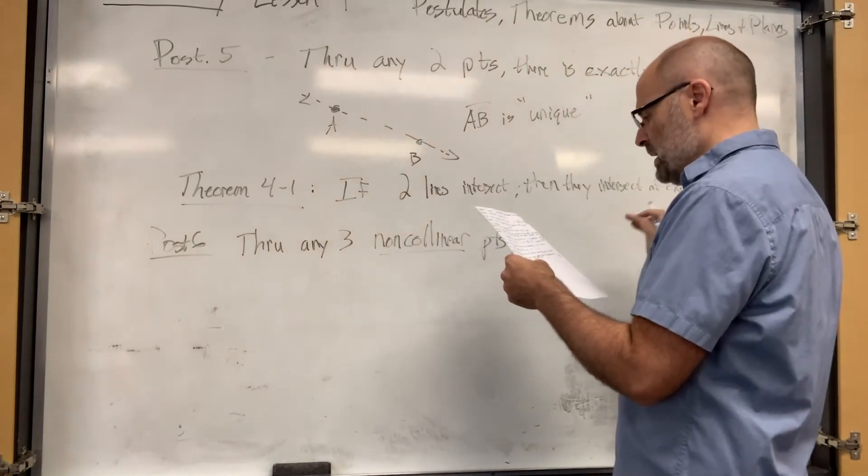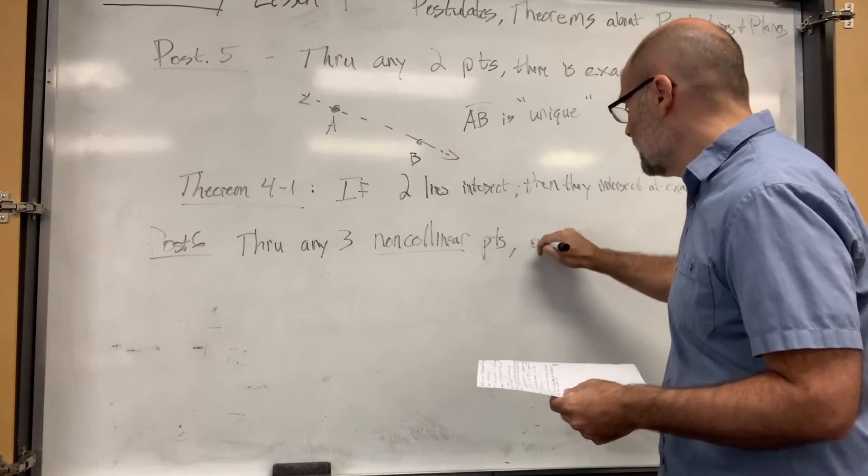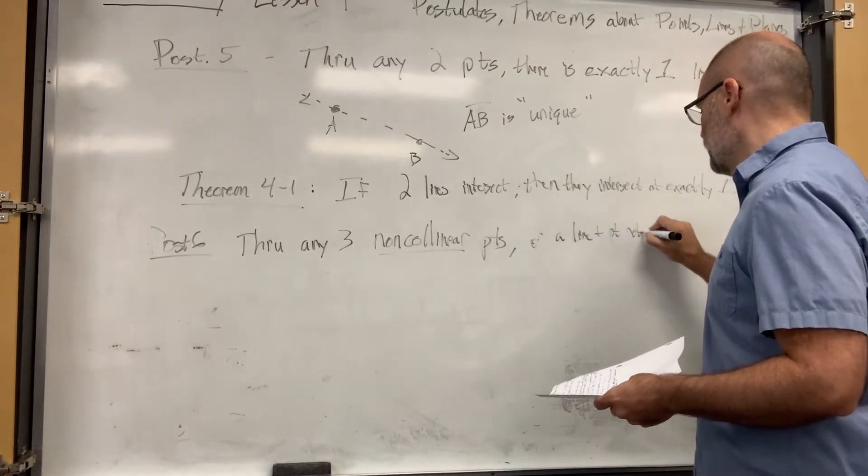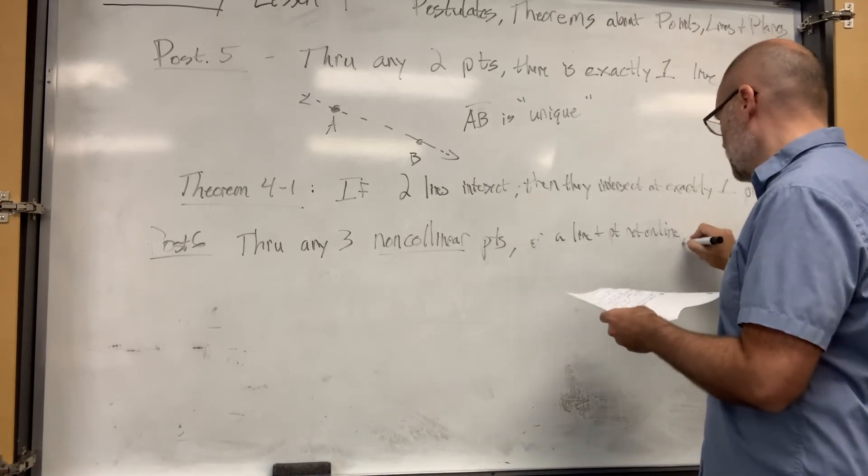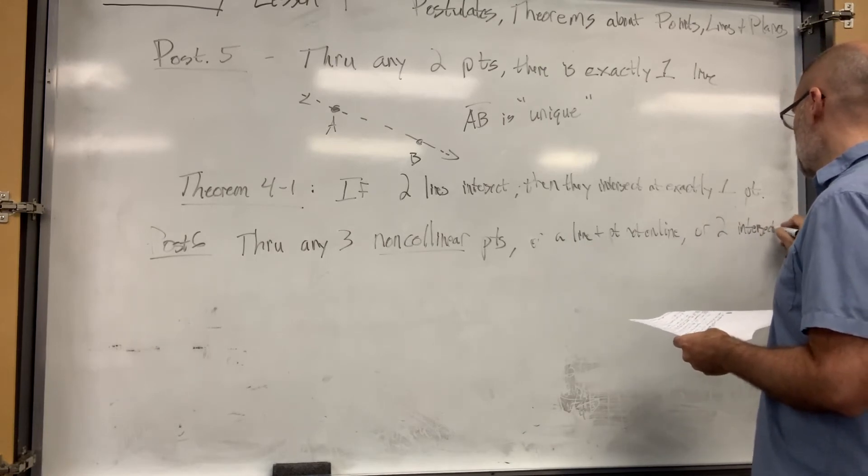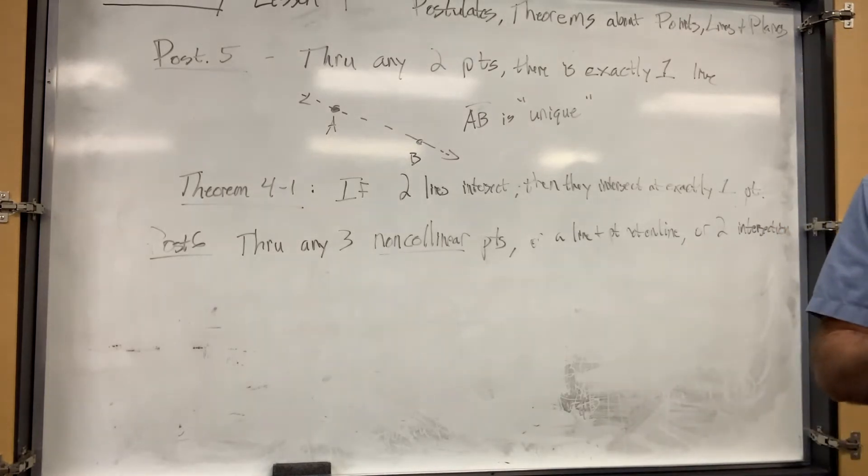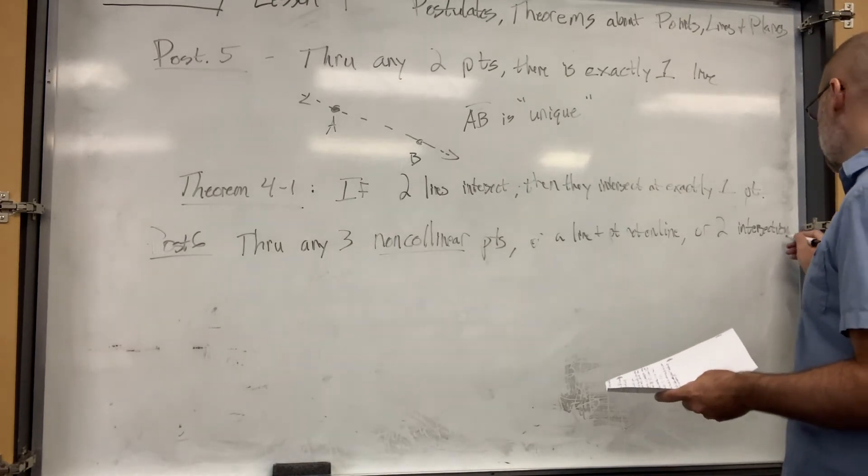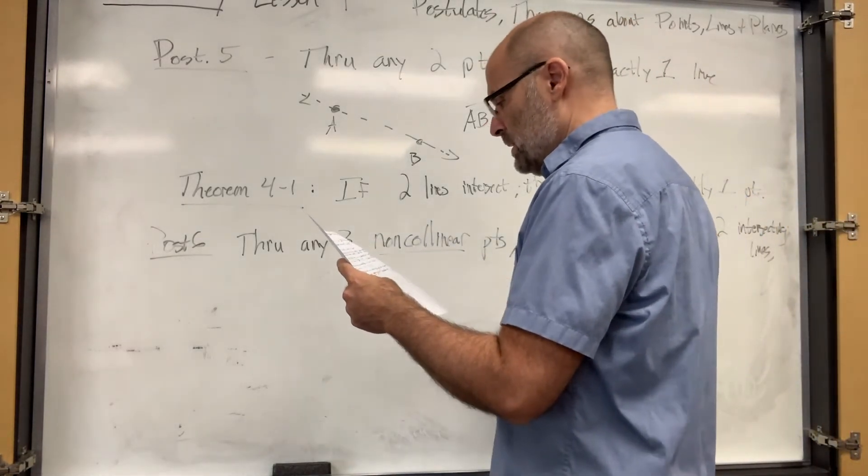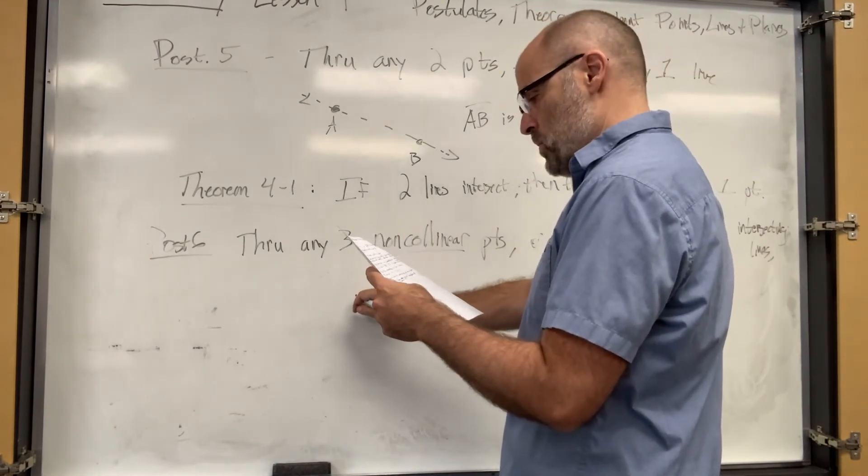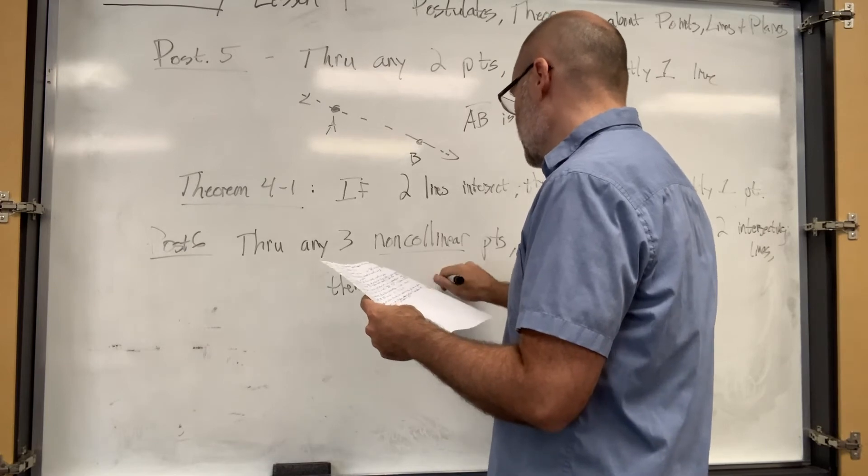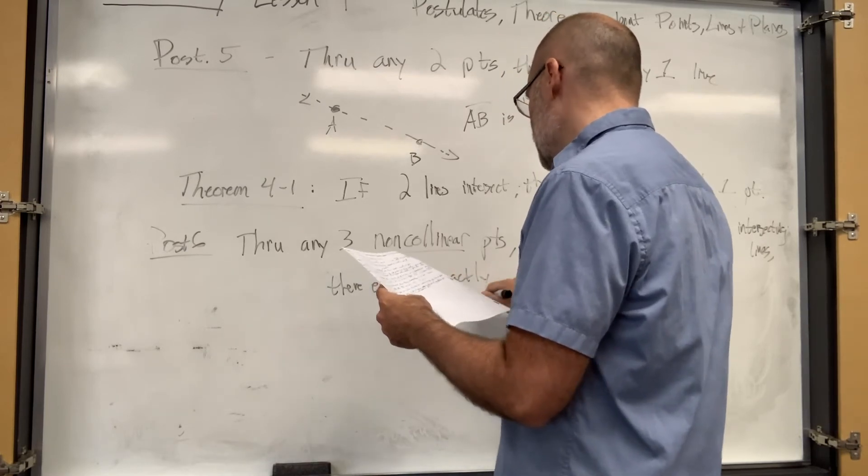A line and a point not on a line, which is three non-collinear points, or just two intersecting lines. So there's three things: three non-collinear points, a point and a line or a point not on the line, or two intersecting lines. There exists only one plane. Exactly, there's one and only one, a unique plane.